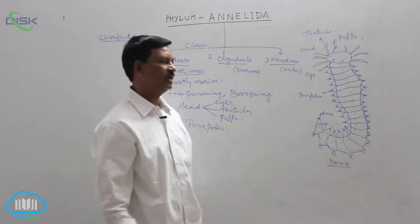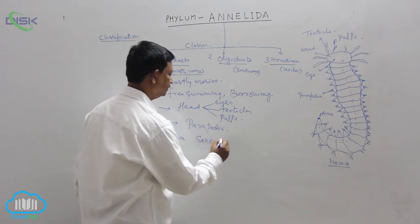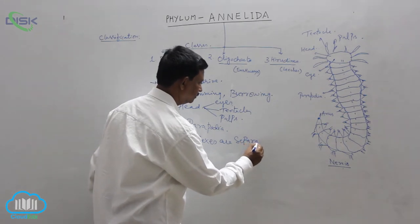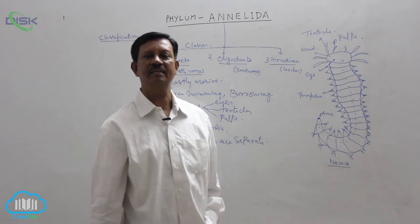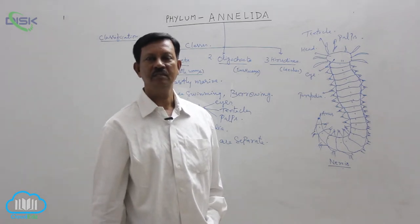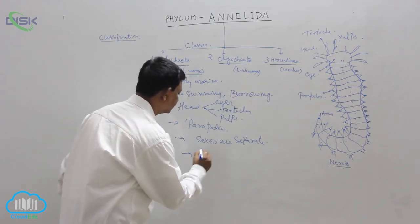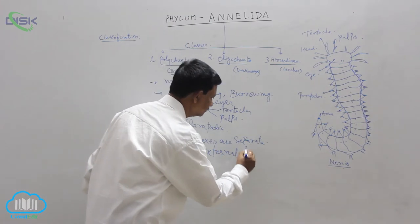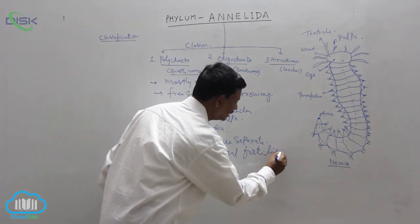Sexes are separate. Male animals and female animals are separate. Male animal as well as female animal discharge their gametes into the marine water. Fertilization takes place in the marine water. That's why it is known as external fertilization, outside the body.